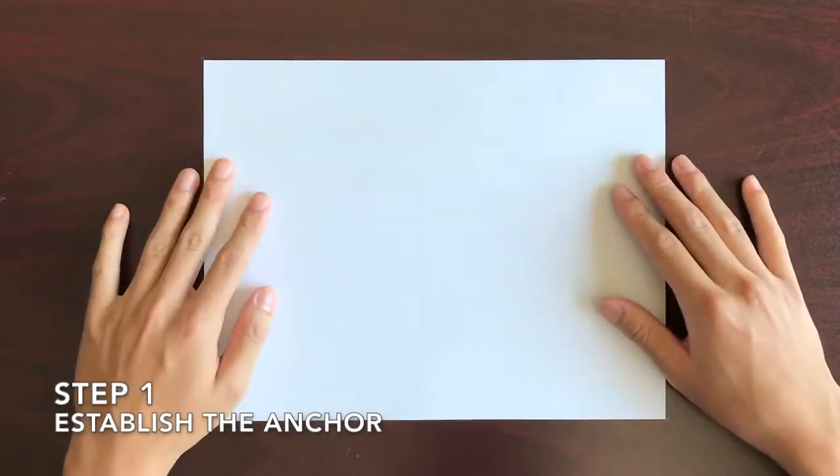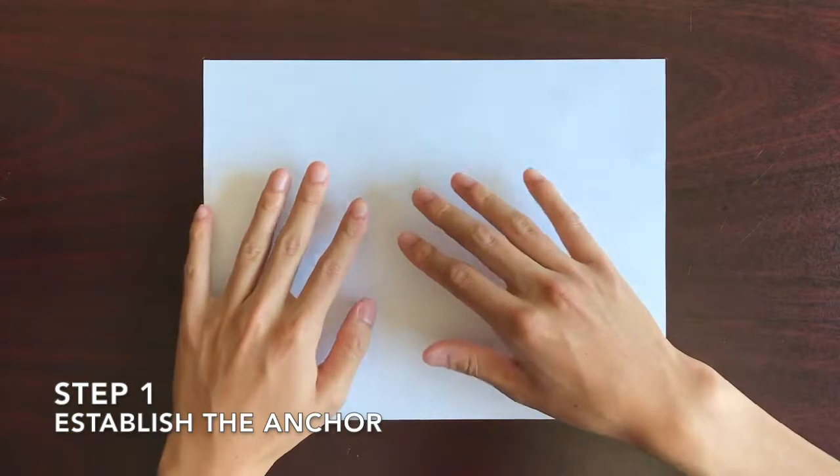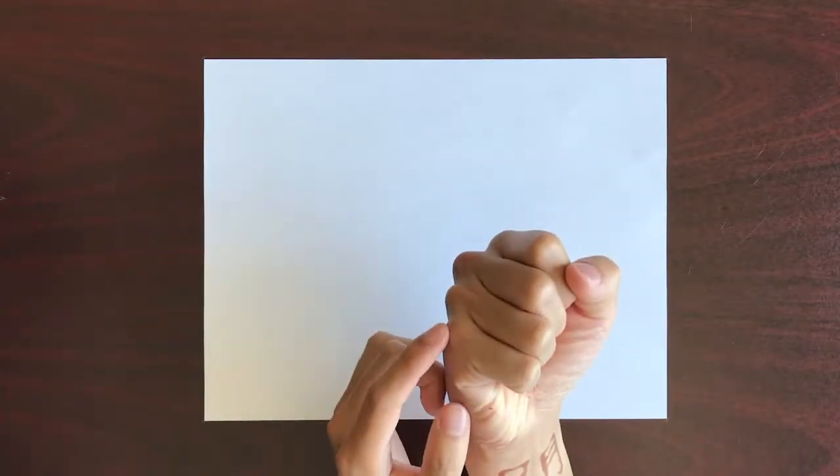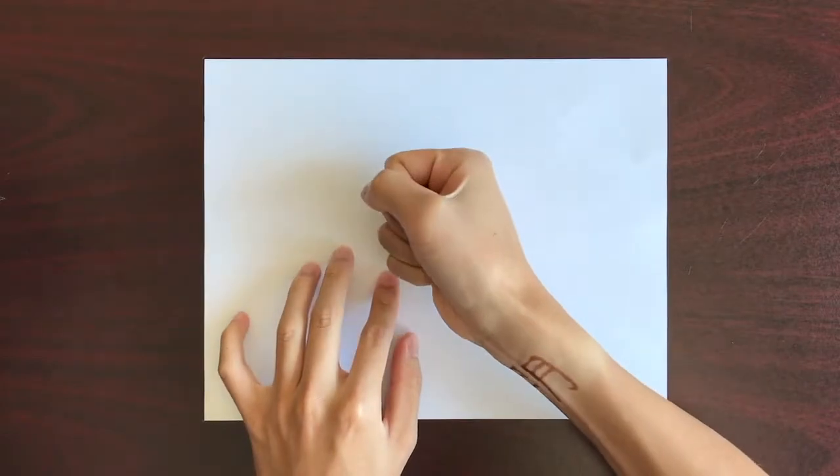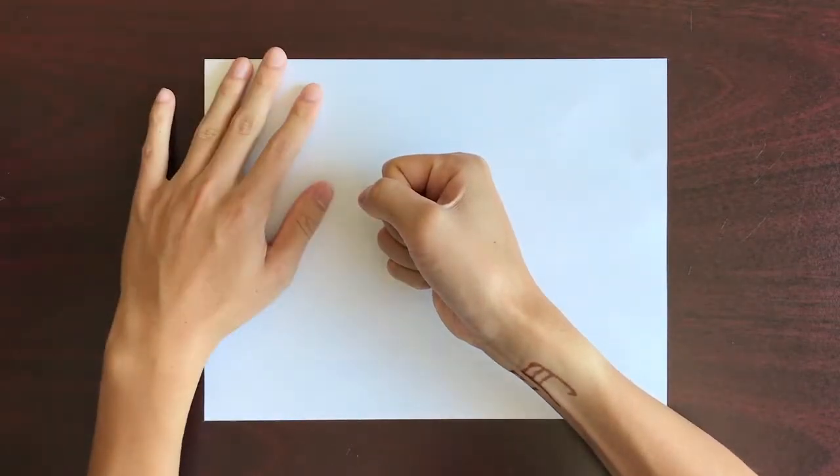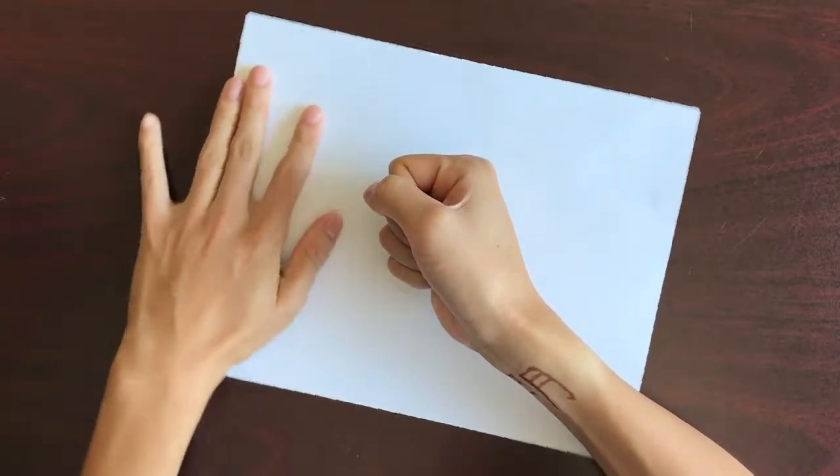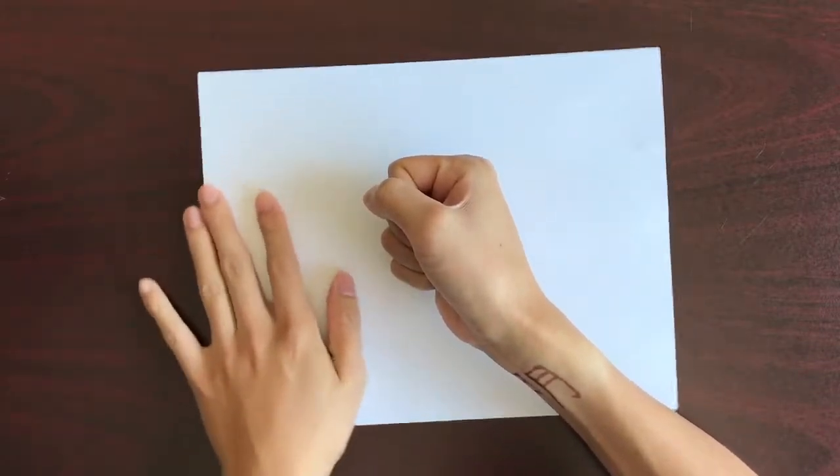In the freehand technique, our hand will become the compass. Locate the fifth knuckle of your dominant hand and place it firmly on a sheet of paper. This will act as the anchor point in our compass. Notice that the paper can rotate freely about this point.